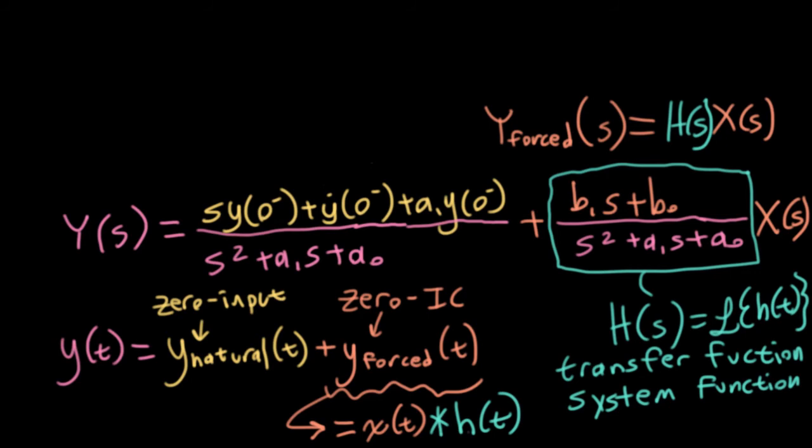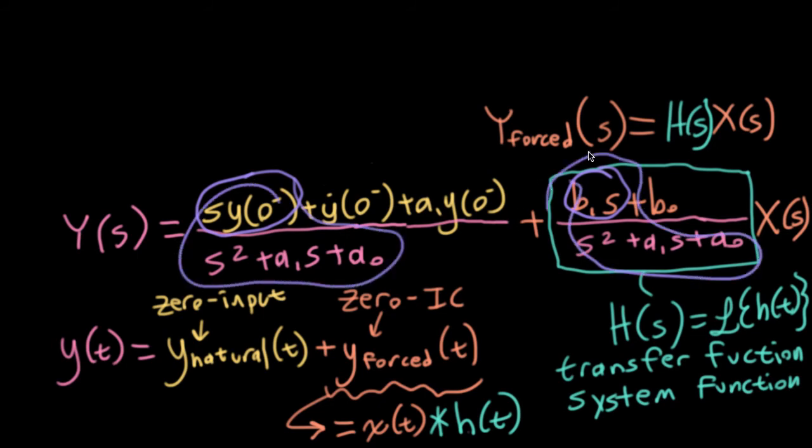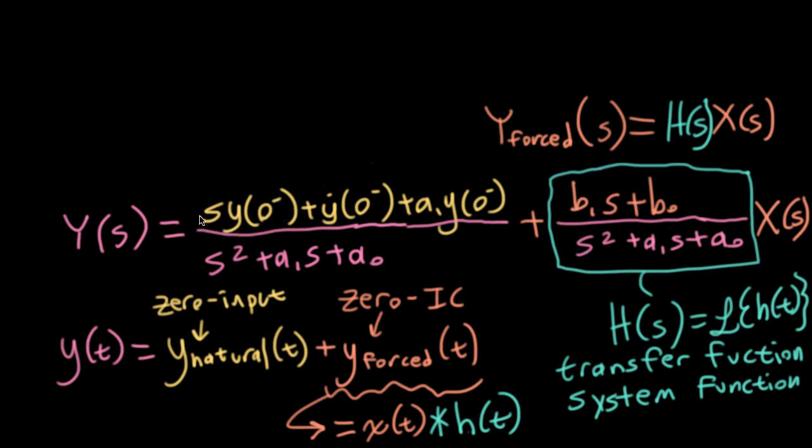So you can get a good amount of the qualitative feel of how a system is going to act based on looking at the denominator of the transfer function. For instance, this B sub 1 S term and this S times this pre-initial condition term, well, if you take the inverse Laplace transforms of these things, they're going to have a similar form.